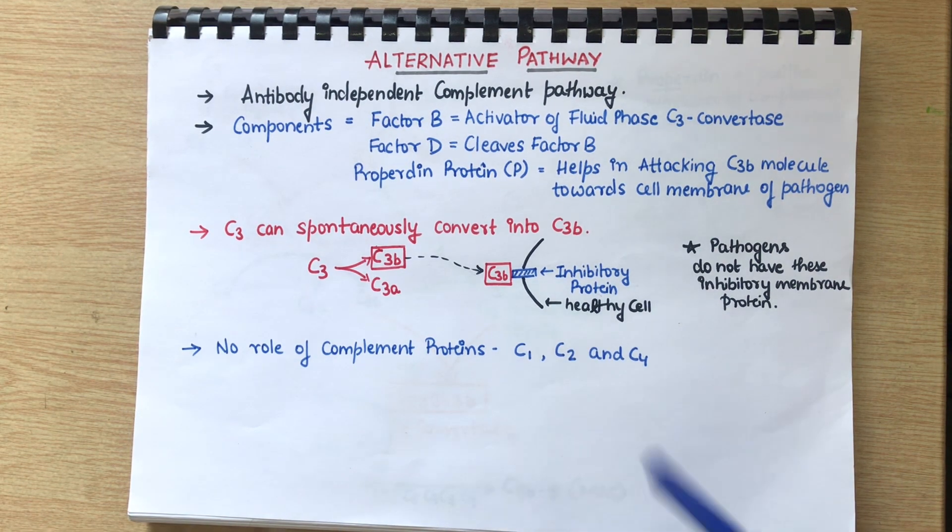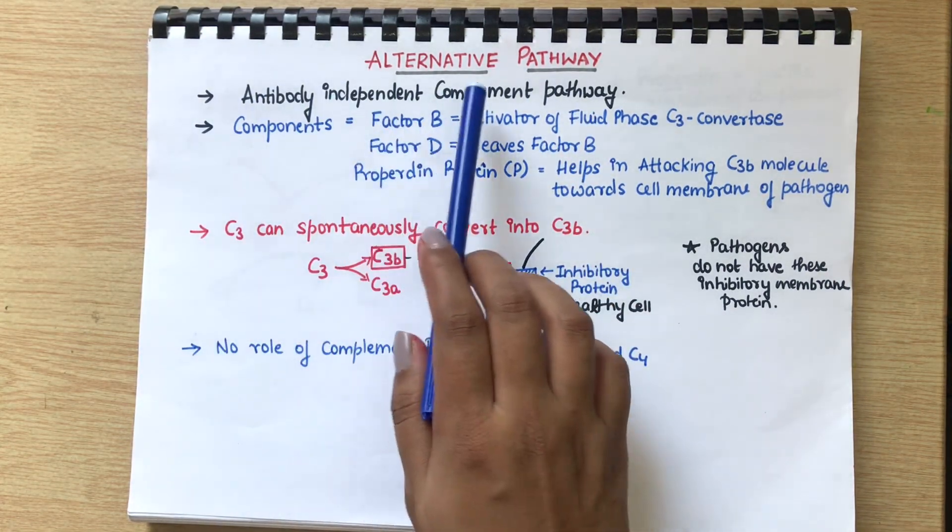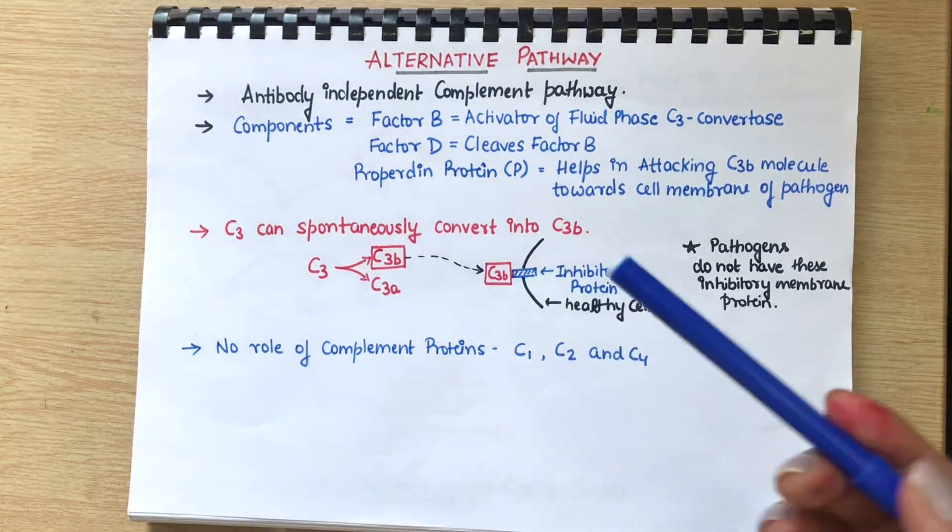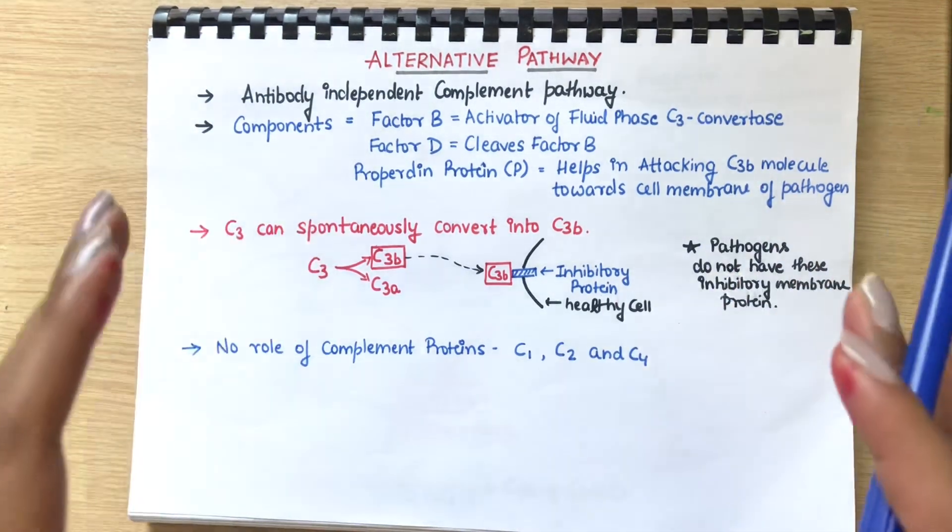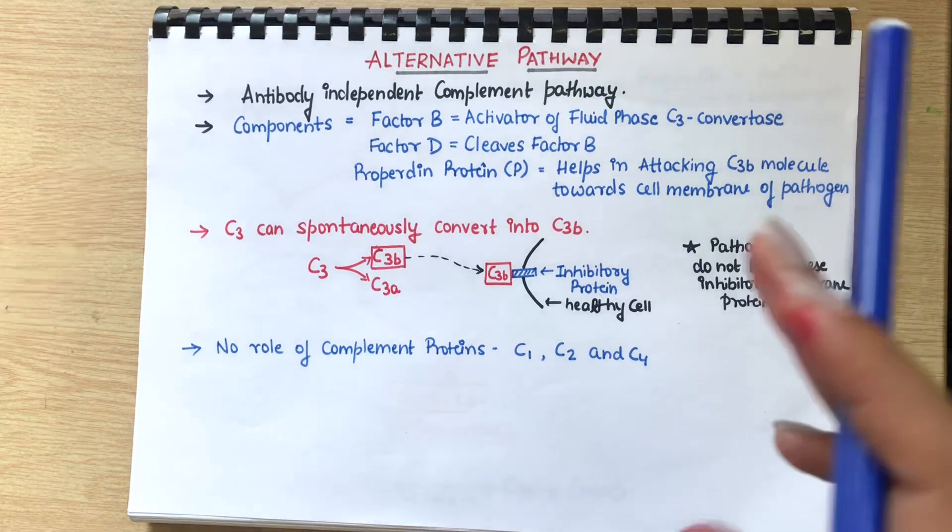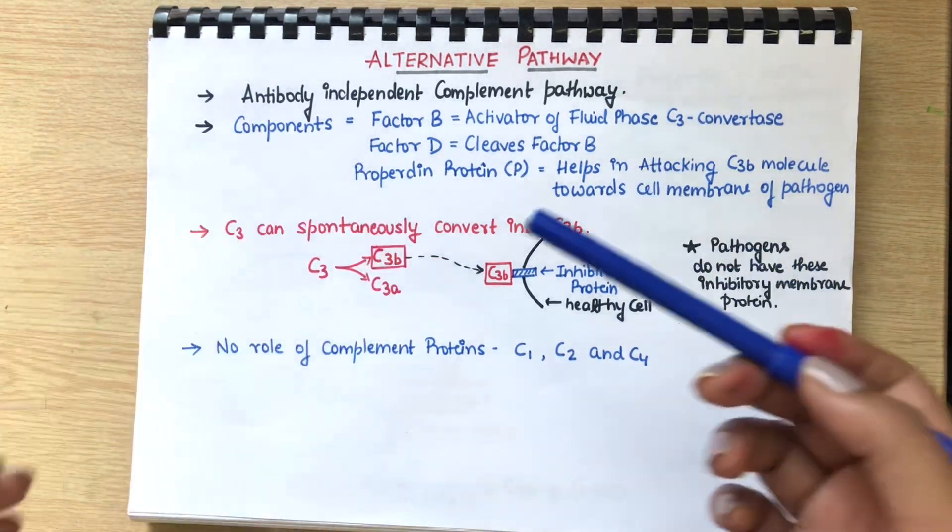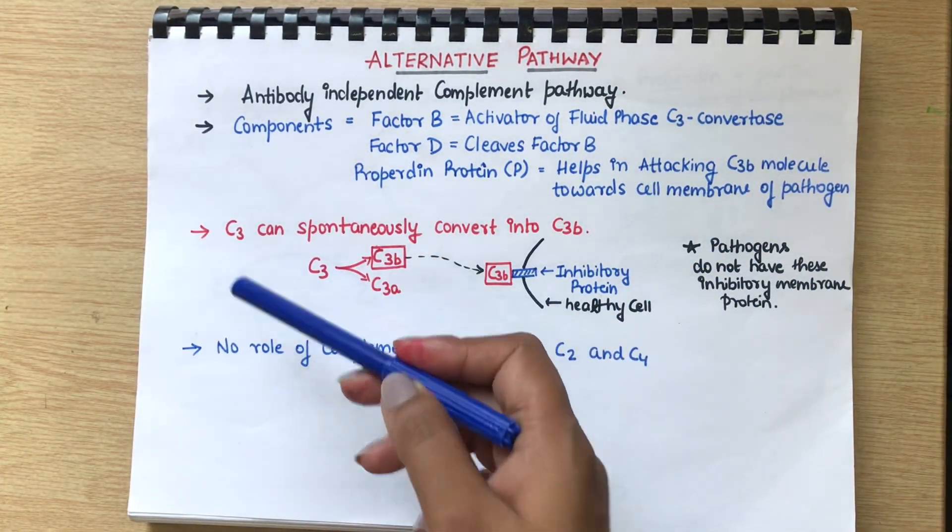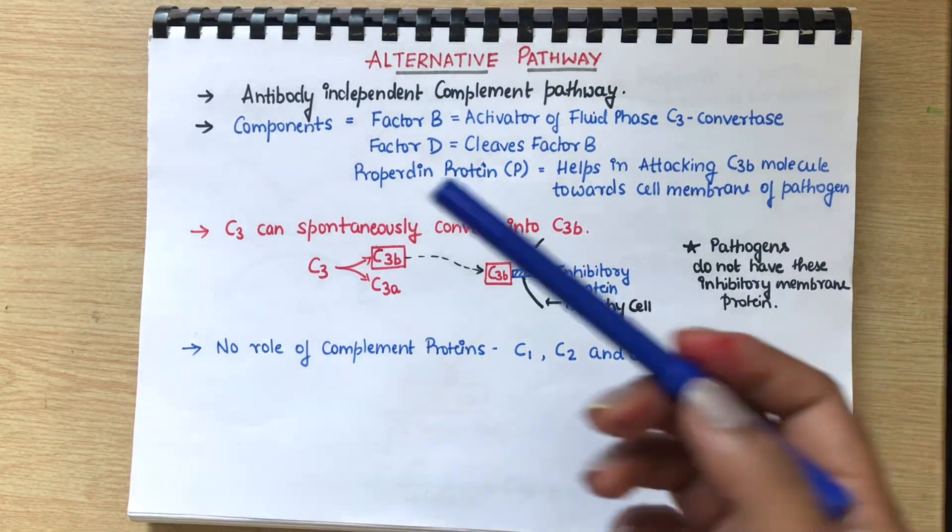The alternative pathway is an antibody-independent complement pathway. That means, unlike the classical pathway, we don't need antigen-antibody complex to activate C1 complex. Here, the C3 complement protein is spontaneously activated.